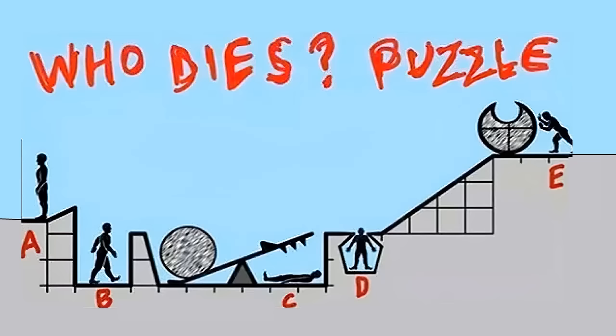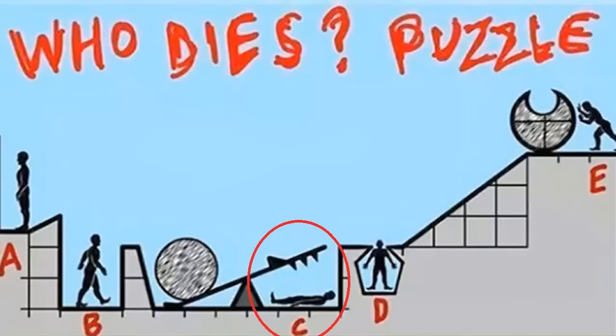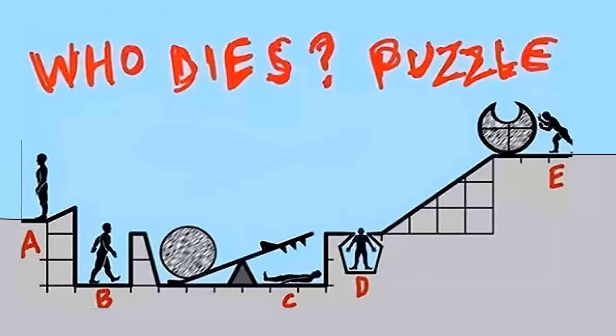This is World's Toughest Puzzle: Who Dies? There are 5 persons marked as A, B, C, D, and E, and you have to find out who all will die when E rolls the stone down.